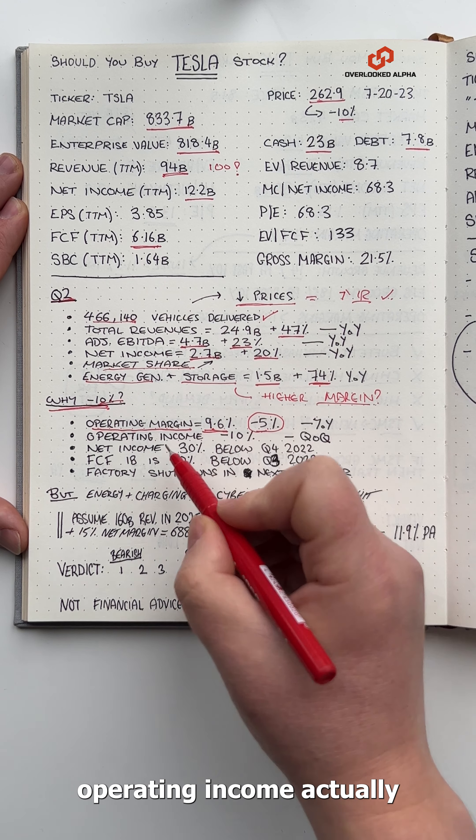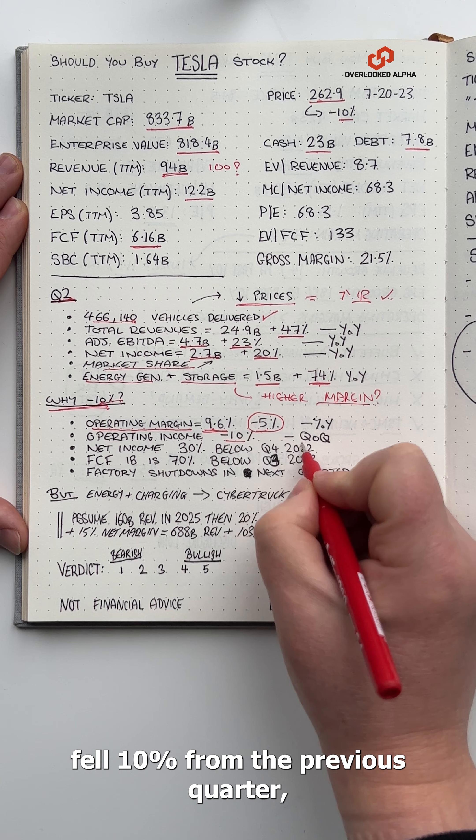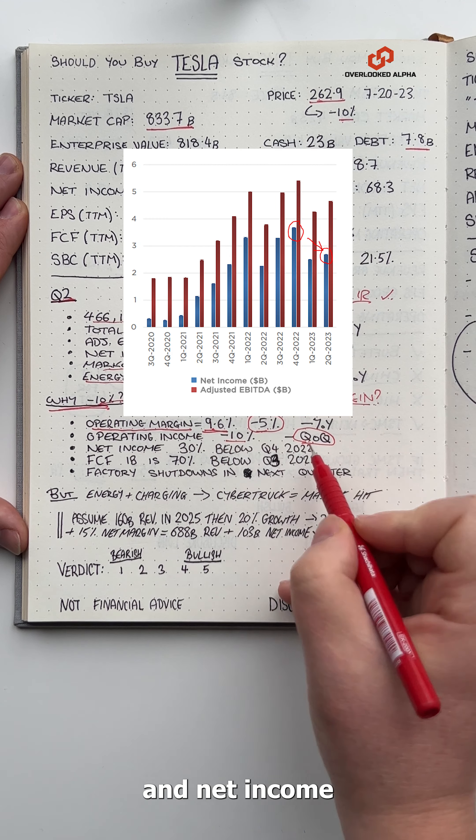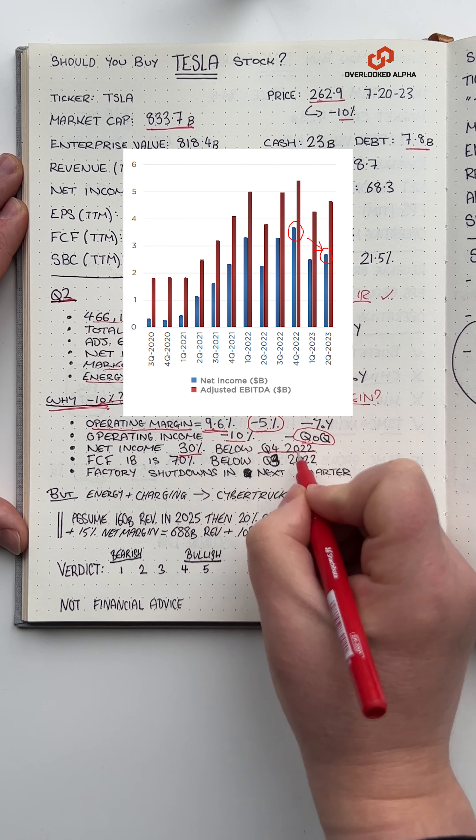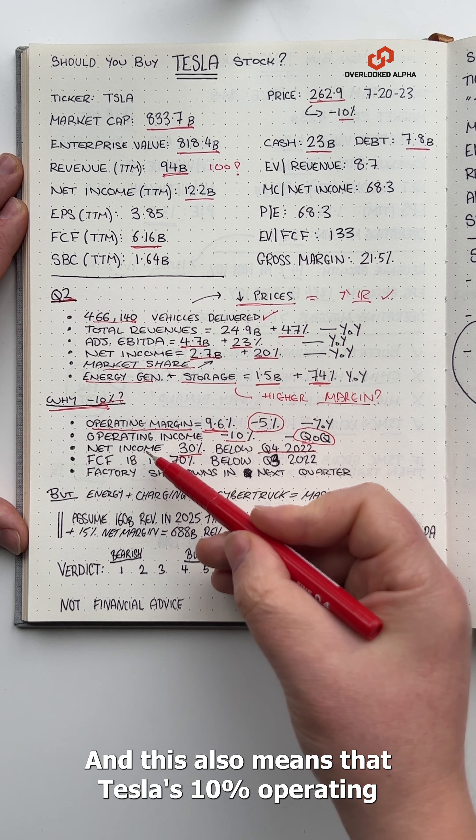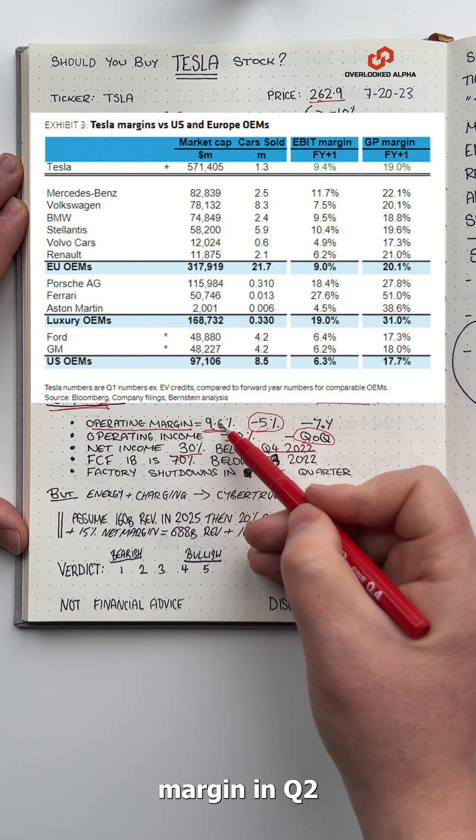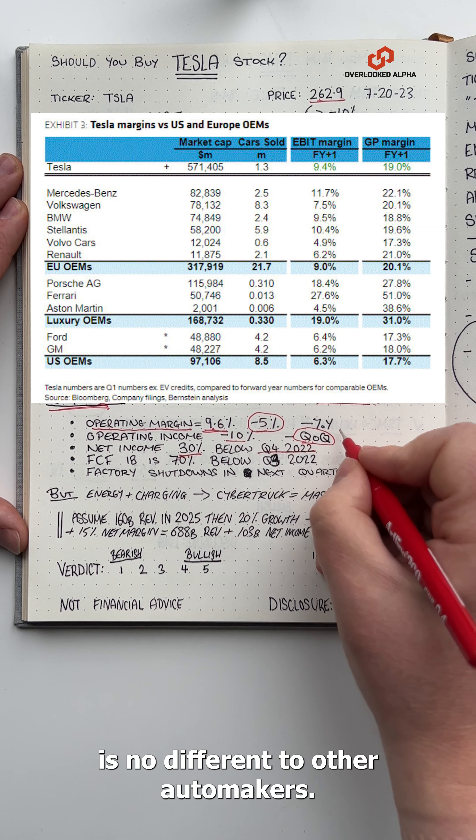As a result, Tesla's operating income actually fell 10% from the previous quarter and net income was 30% below the fourth quarter of 2022. And this also means that Tesla's 10% operating margin in Q2 is no different to other automakers.